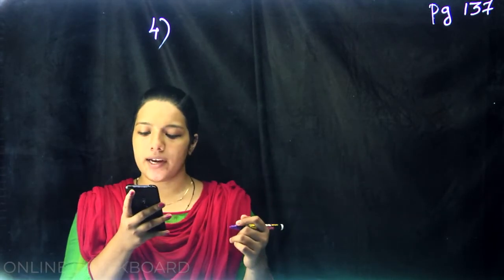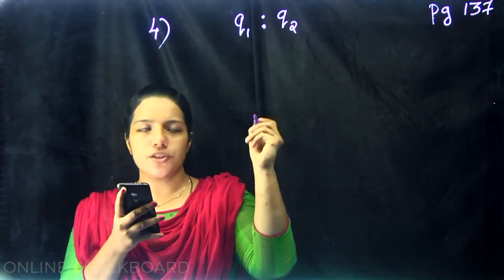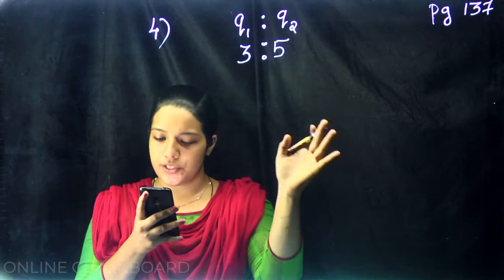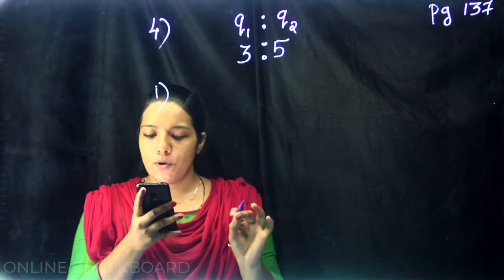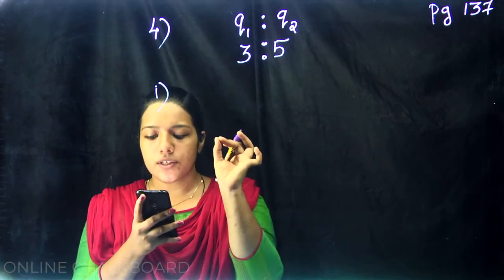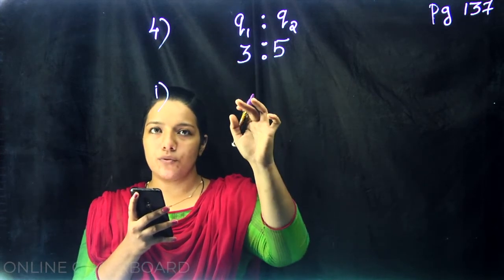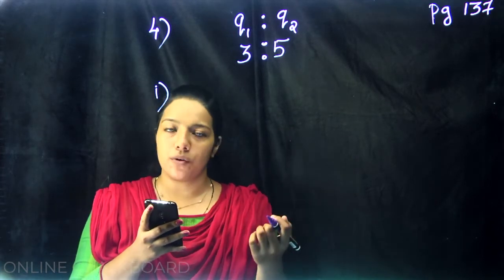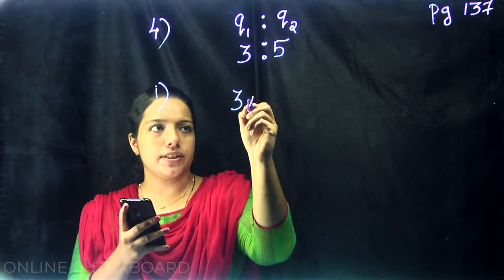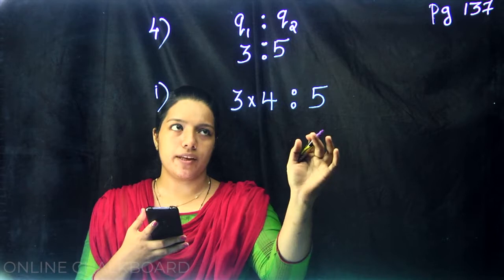We have two quantities Q1 and Q2 in the ratio 3 is to 5. For the first part, the smaller quantity is 3. If the smaller is made 4 times the original, we can show that the new ratio is 3 into 4, which is to 5. So 3 into 4 is 12.